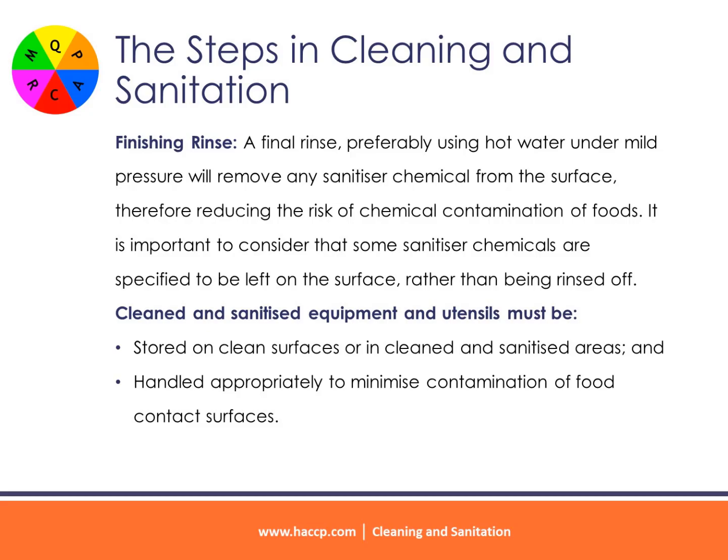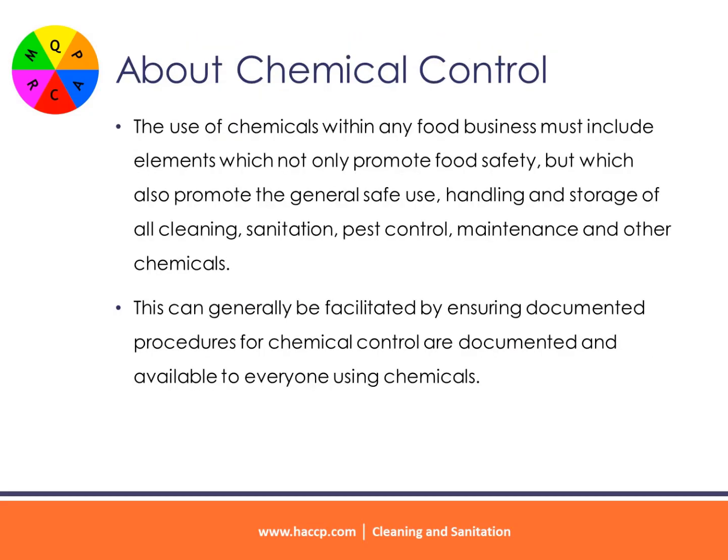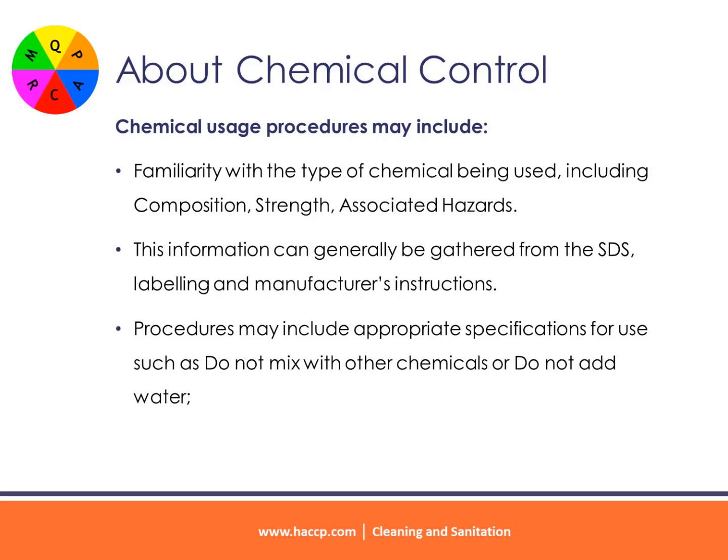Cleaned and sanitized equipment and utensils must be stored on cleaned surfaces or in cleaned and sanitized areas, and handled appropriately to minimize contamination of food contact surfaces. The use of chemicals within any food business must include elements which promote food safety as well as the general safe use, handling and storage of all cleaning, sanitation, pest control, maintenance and other chemicals. This can be facilitated by ensuring documented procedures for chemical control are available to everyone using chemicals. Chemical usage procedures may include familiarity with the type of chemical being used, including its composition, strength and associated hazards, which can be gathered from the SDS, labeling and manufacturer's instructions.